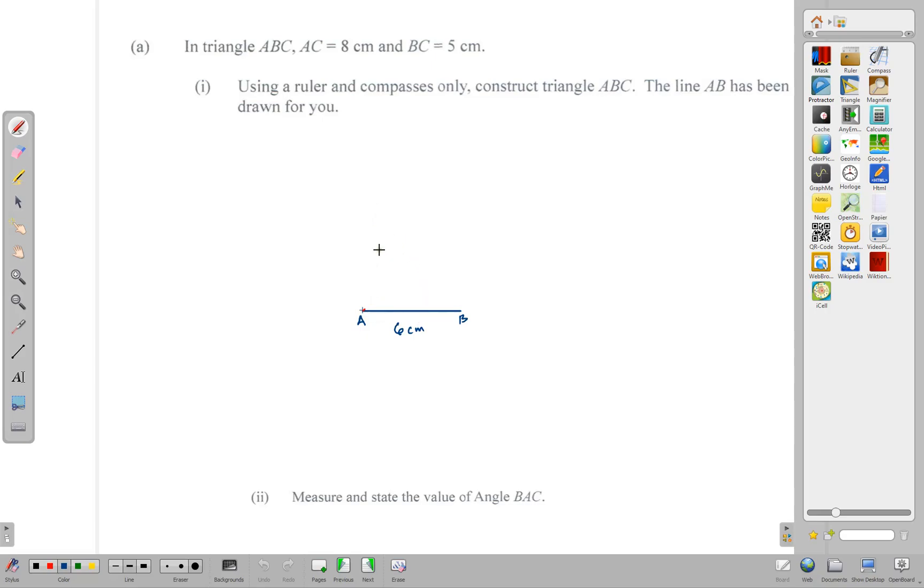Using a ruler and compass only, construct triangle ABC. The line AB has been drawn as stated, so in order to complete the question we need to get a compass.